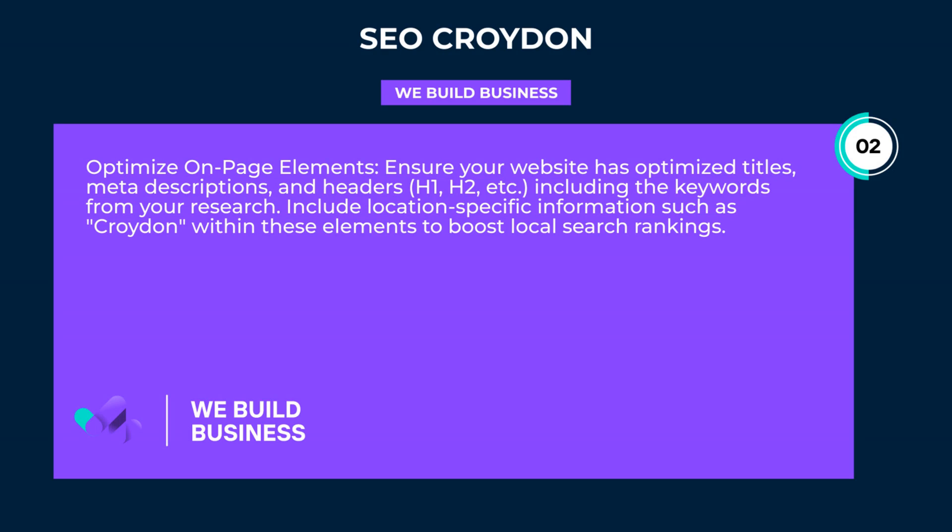Optimize on-page elements. Ensure your website has optimized titles, meta descriptions, and headers (H1, H2, etc.), including the keywords from your research. Include location-specific information such as Croydon within these elements to boost local search rankings.